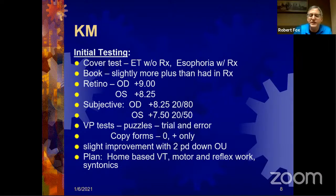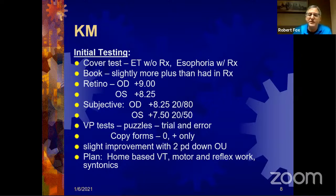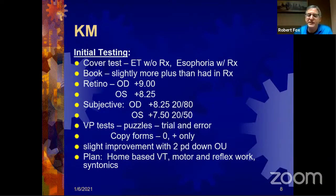I used the copy forms test — a standardized test of seven shapes: circle, cross, square, triangle, divided rectangle, and vertically and horizontally oriented diamonds. She could only do a circle and a cross, which puts her at about a three-to-four-year-old level — several years behind. She just didn't even want to do it. I tried some prisms but said, let's do some therapy here and see if things improve without changing her prescription, since I was finding mostly lenses similar to what she was wearing.